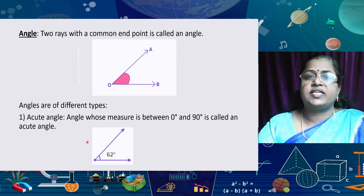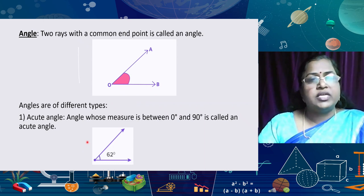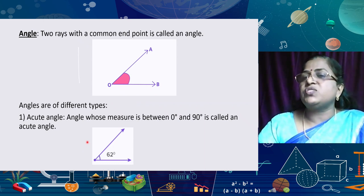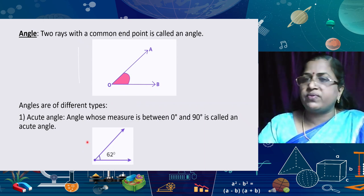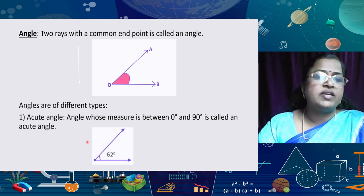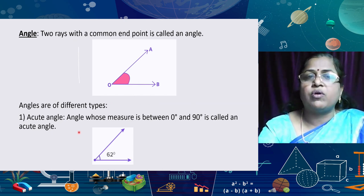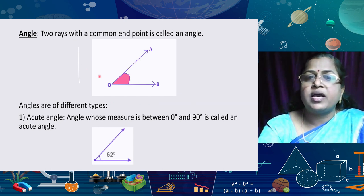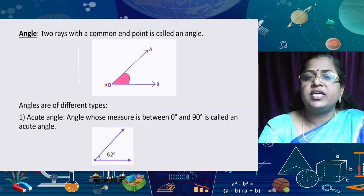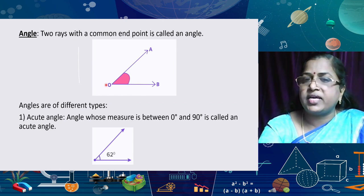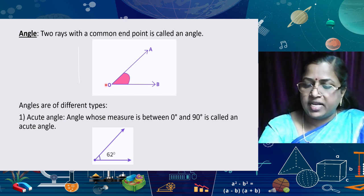So now, what about angles? Two rays with a common endpoint is called an angle, and here AOB is an angle. It has one vertex O and two rays OA and OB, and the angle AOB has some measure.